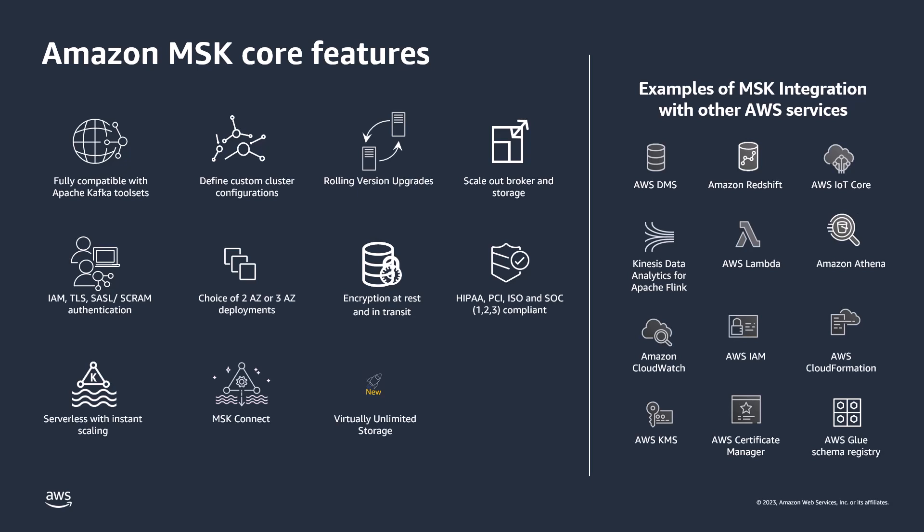These are the core capabilities of Amazon MSK. In terms of compatibility and elasticity, the service is fully compatible with open-source Apache Kafka and its toolset. You can apply custom configurations, use rolling version upgrades to maintain high availability, enable auto-scaling for storage, and scale brokers vertically and horizontally. For authentication, you can enable multiple mechanisms within the same cluster — including IAM, TLS, SASL/SCRAM — and MSK integrates with AWS KMS for server-side encryption. Data is always encrypted at rest, and clusters can be deployed across two or three availability zones.